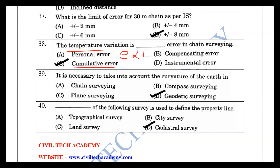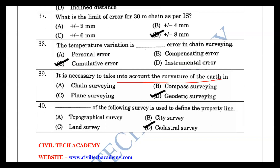The mean sea level correction is a cumulative error. In geodetic survey, the curvature of the earth is taken into account and the mean sea level correction is necessary.